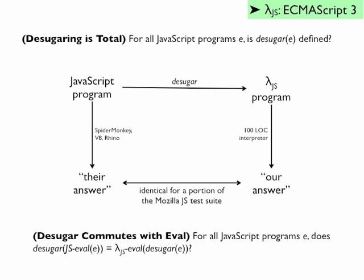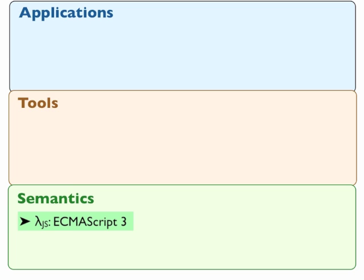The semantics that we've presented for JavaScript so far is just one piece of a broader suite of tools we are building for JavaScript. We like to think of this suite as comprised of three layers. At the lowest level are these semantics, which lay the foundations for any subsequent analyses. Above these are tools, which implement general-purpose analyses for JavaScript programs.